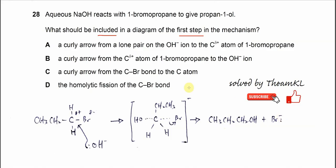So what is the first step that is needed? Let's look at A: a curly arrow from the lone pair on the hydroxide to the partial positive carbon atom in the 1-bromopropene. This is correct because it's a lone pair on hydroxide to the partial positive carbon. So the answer is therefore A.